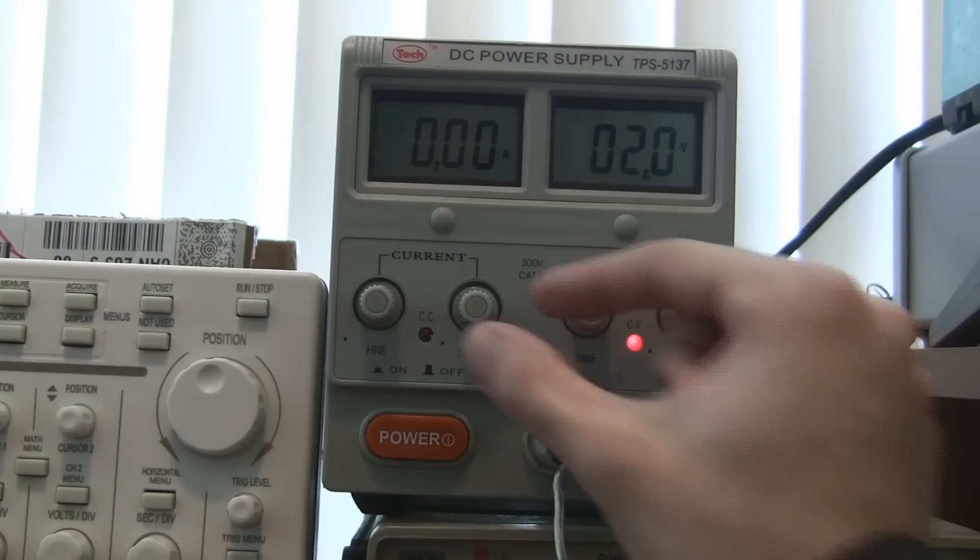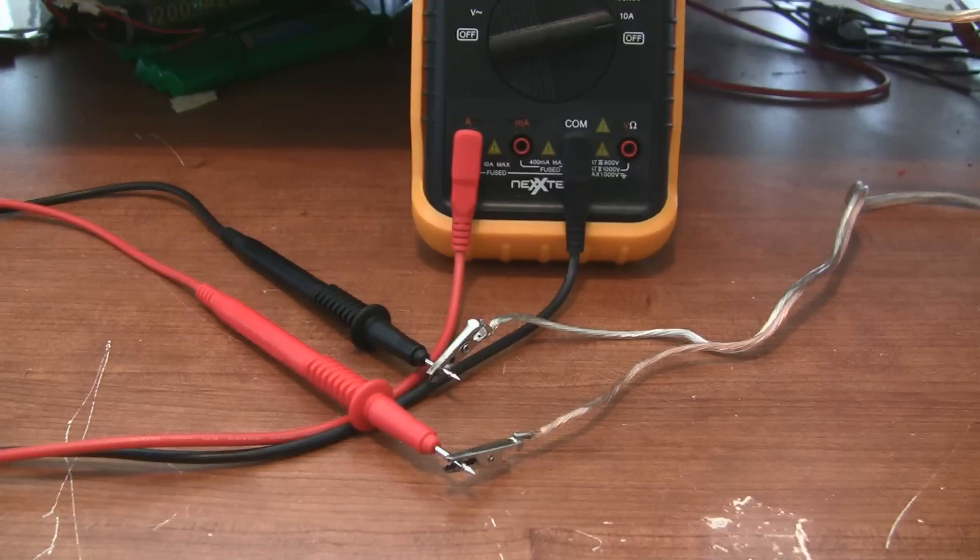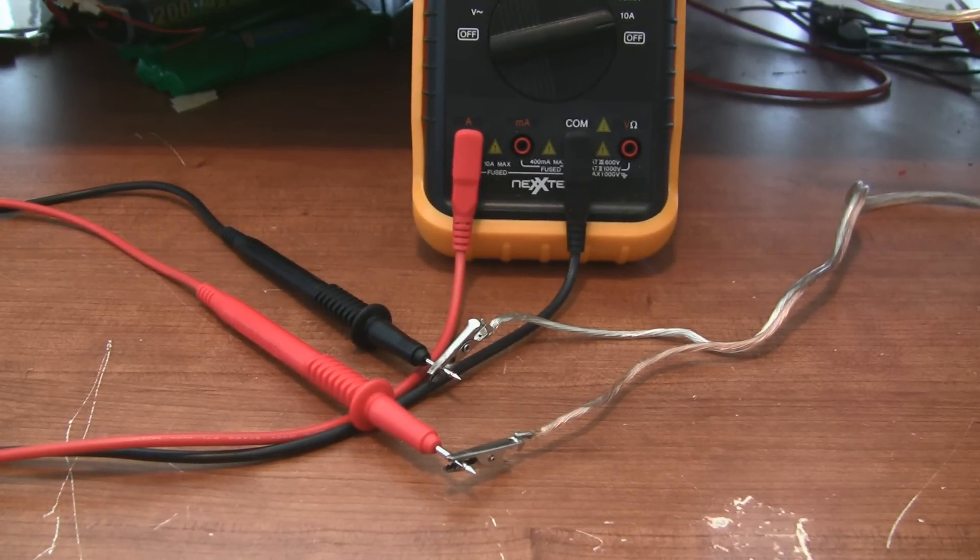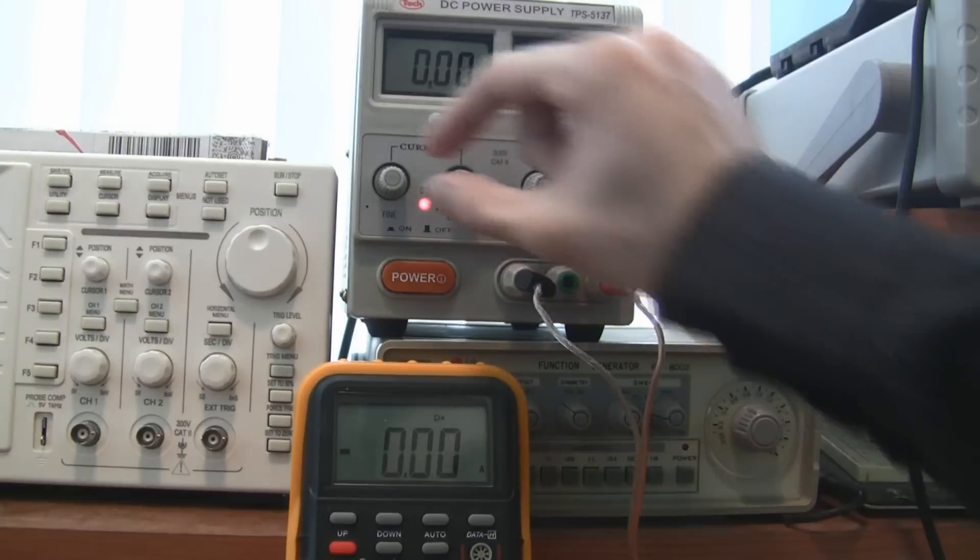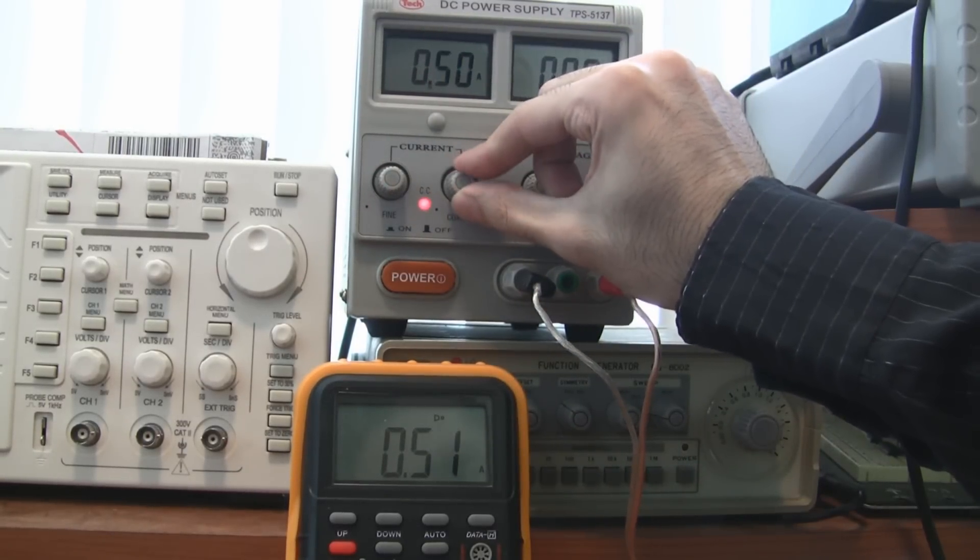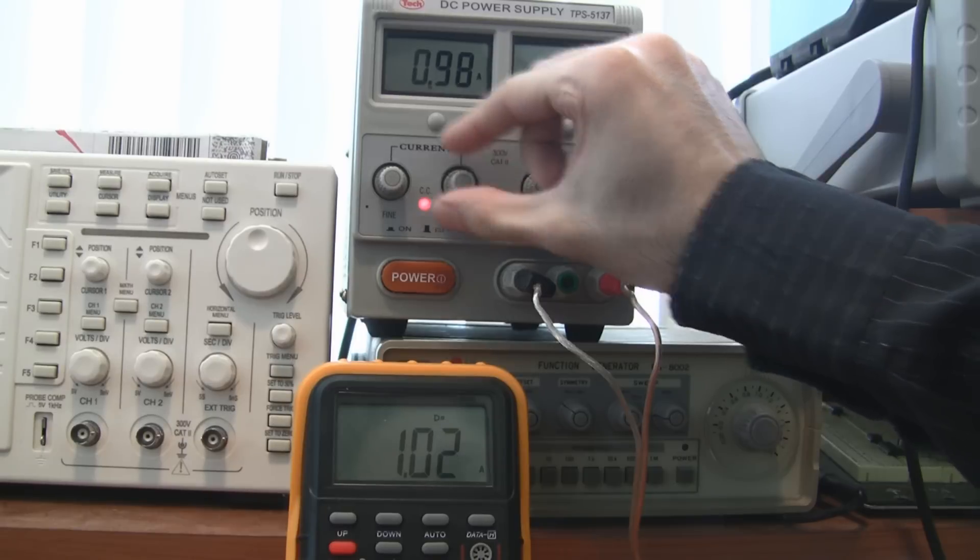Start with the current limiting dial set to 0. Now connect a multimeter set to measure current directly across the power wires. Now we just need to increase the current limits so that we get exactly 1 amp. Doing this with the multimeter gives you a little more accuracy than just reading the bench supply's display.